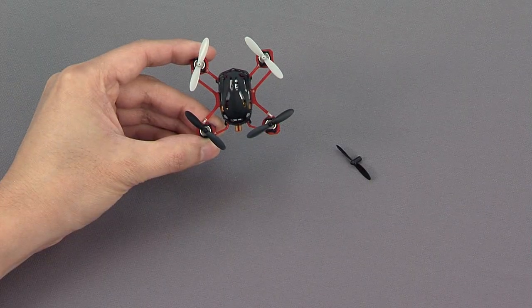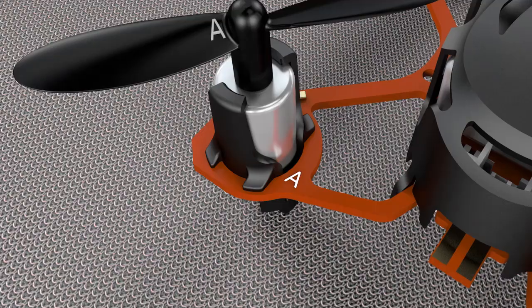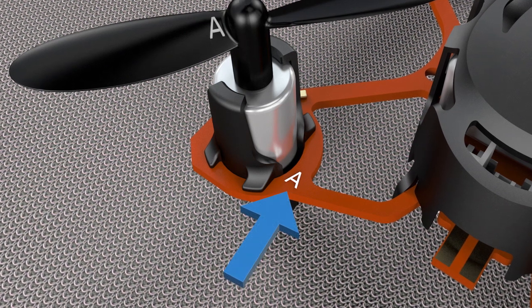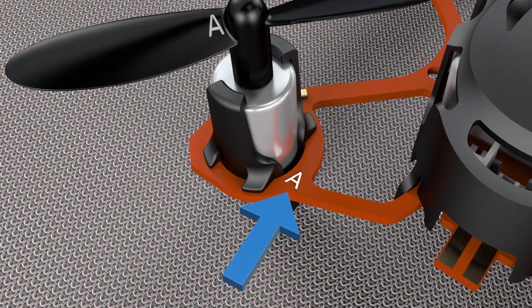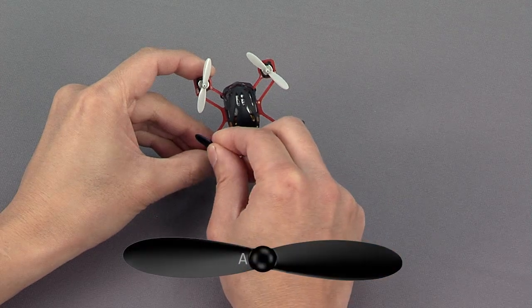Remove the damaged black rotor blade. Look for the small A on the left side of the quadcopter. Find the black rotor blade with the matching A on it.